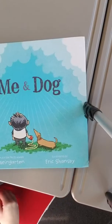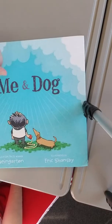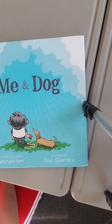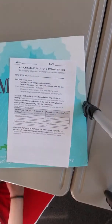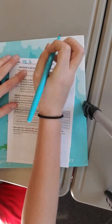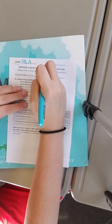Okay, this one is your listen and respond. This story is called Me and Dog. What you're gonna do here is put your name at the top, put the date, and then put the title of the story.